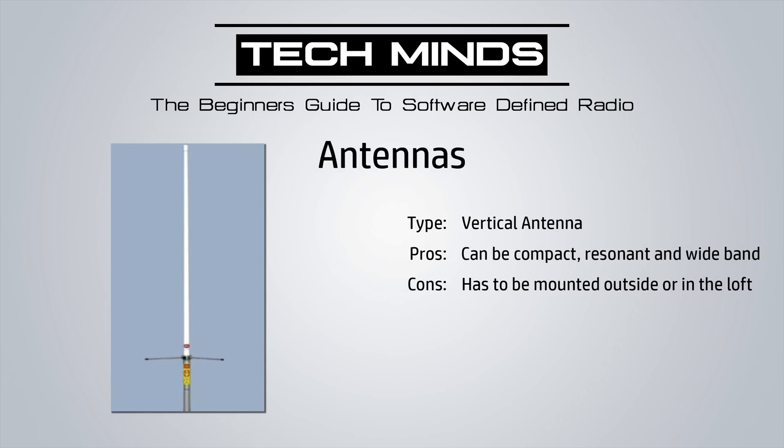The next type is a vertical antenna. These can be quite compact, resonant on specific bands like 2m and 70cm, and can also come with very wide band receive. The con is again you have to mount it outside or in the loft — as with the discone, the higher the better.